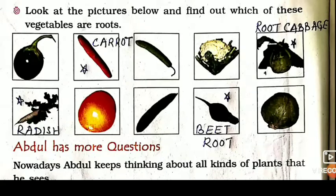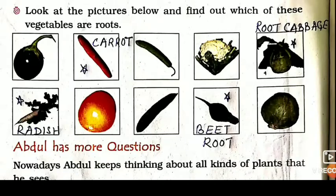In the boxes I have made a star and written the names. These are the roots that we eat and they are found in the ground. In the second picture you can see that is a carrot — C-A-R-R-O-T. Then in the first line, the last box, you can see root cabbage — R-O-O-T, C-A-B-A-G-E, root cabbage.